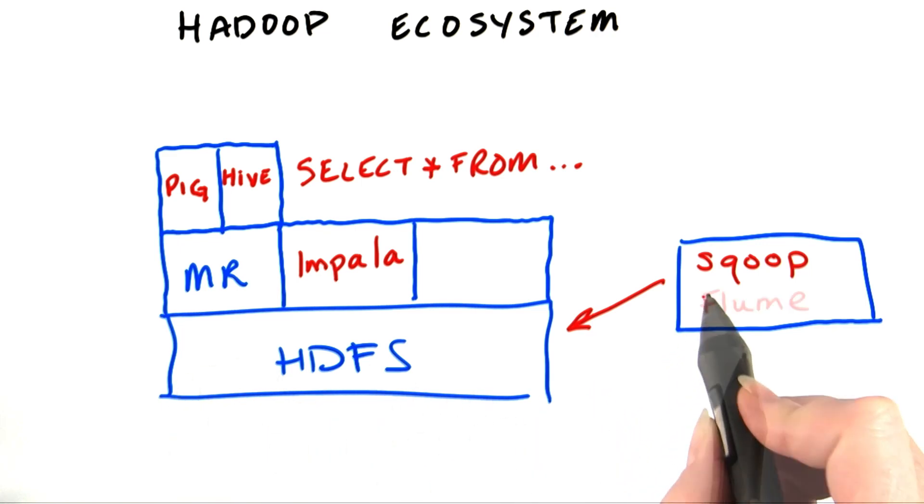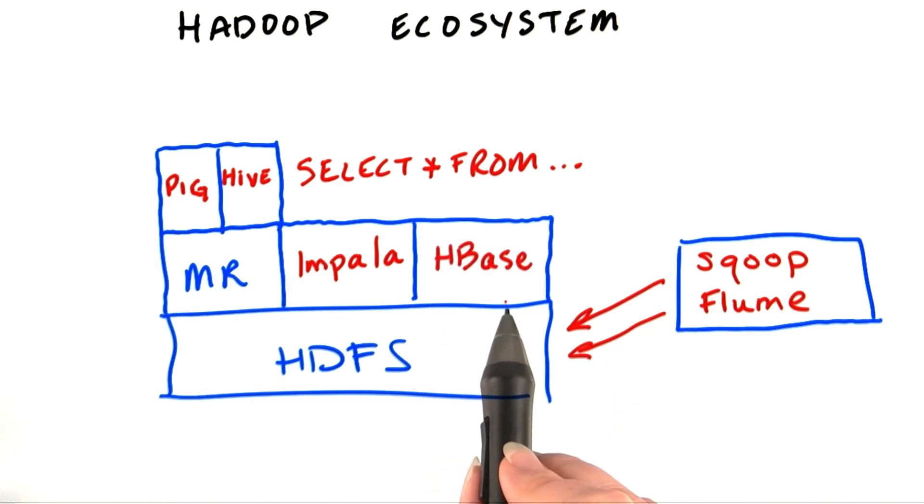Then there's Flume, which ingests data as it's generated by external systems and again puts it into the cluster. HBase is a real-time database built on top of HDFS, and there's more.